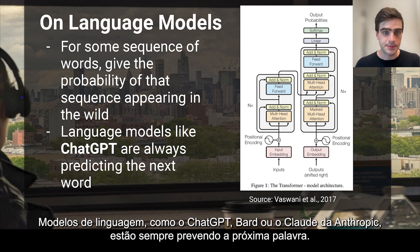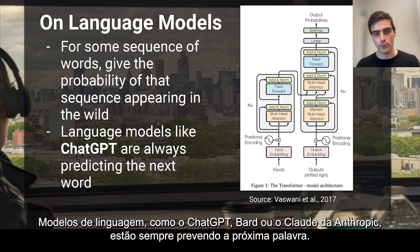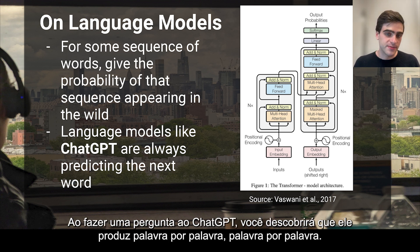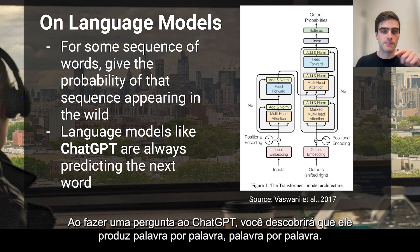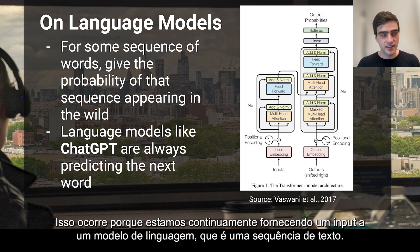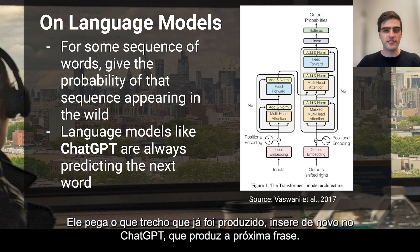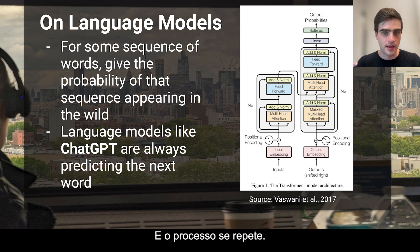Language models like ChatGPT, BARD, or Anthropic's Claude are always predicting the next word. We just ask them what word is likely to follow. So quickly, it looks like the model is writing. When you ask ChatGPT a question, you'll find that it produces word by word by word. This is because we're continually giving the language model that string of text that ChatGPT has already produced. We give it to ChatGPT, it produces the next word, and we repeat and repeat and repeat.